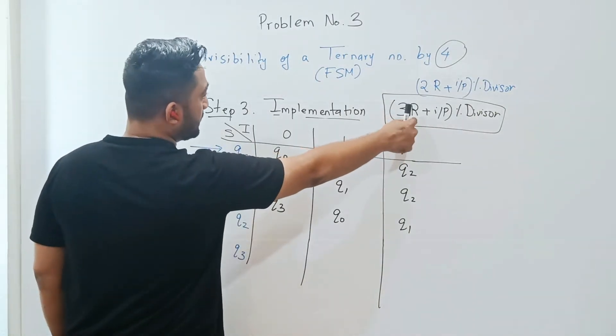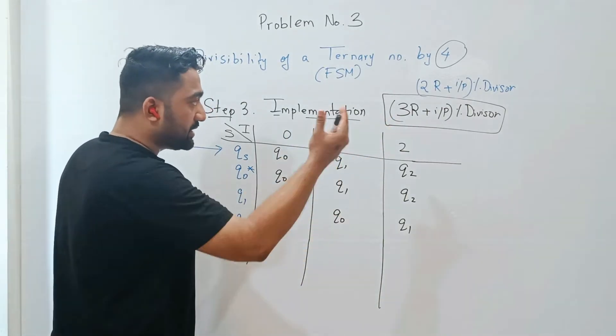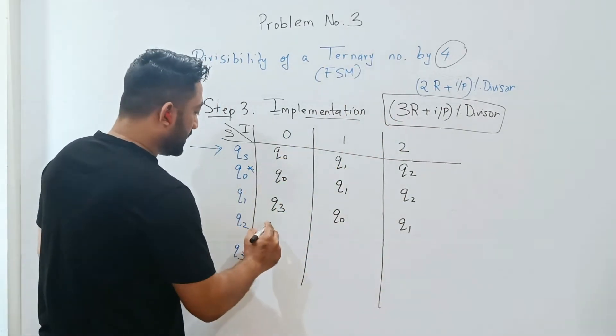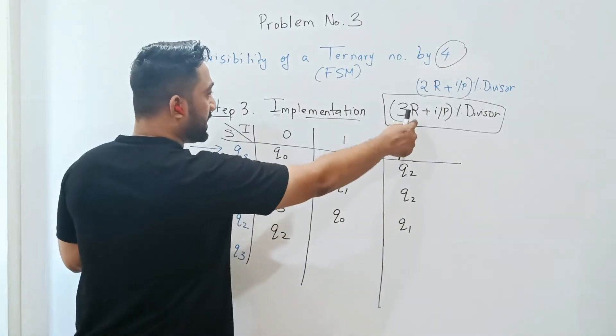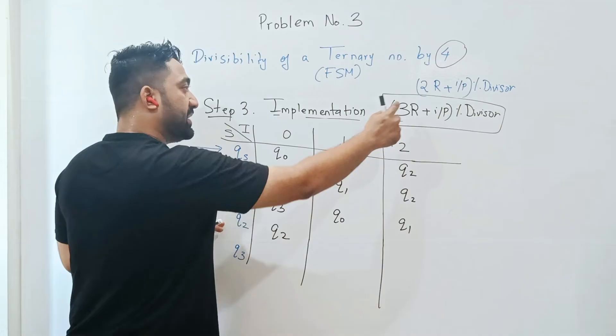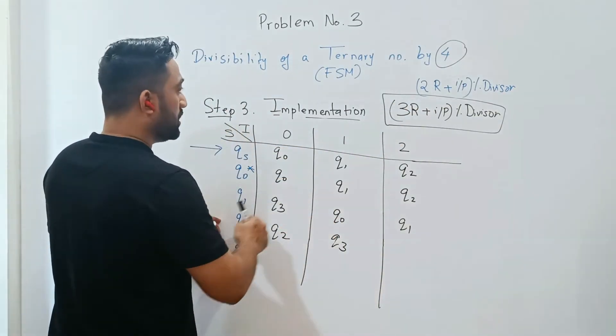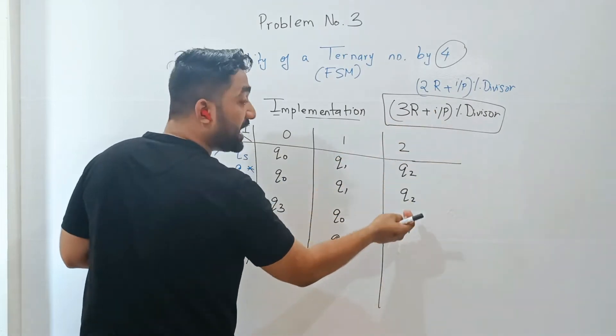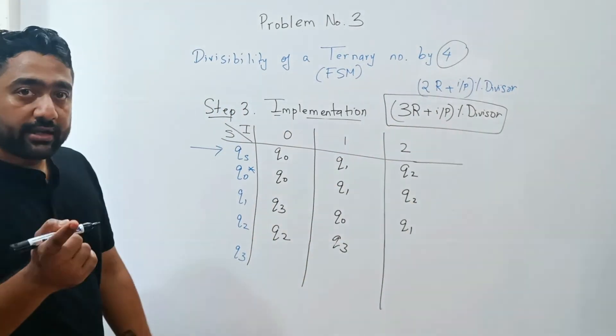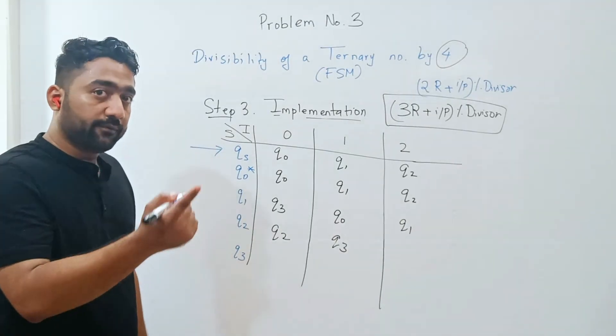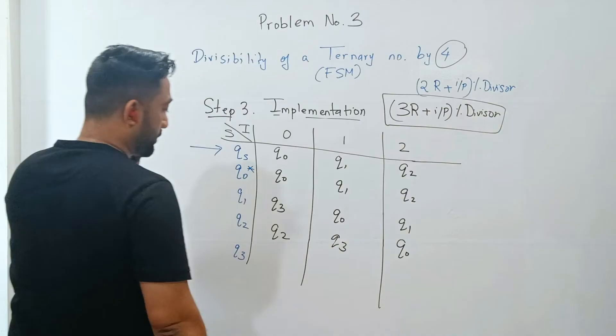For q2: 2 times 3 is 6, 6 plus 0 is 6, 6 mod 4 has remainder 2, so q2. Similarly, 2 times 3 is 6, 6 plus 1 is 7, 7 mod 4 is 3, so q3. Then 2 times 3 is 6, 6 plus 2 is 8, 8 mod 4 - 8 divides completely by 4, so remainder 0, that's q0.